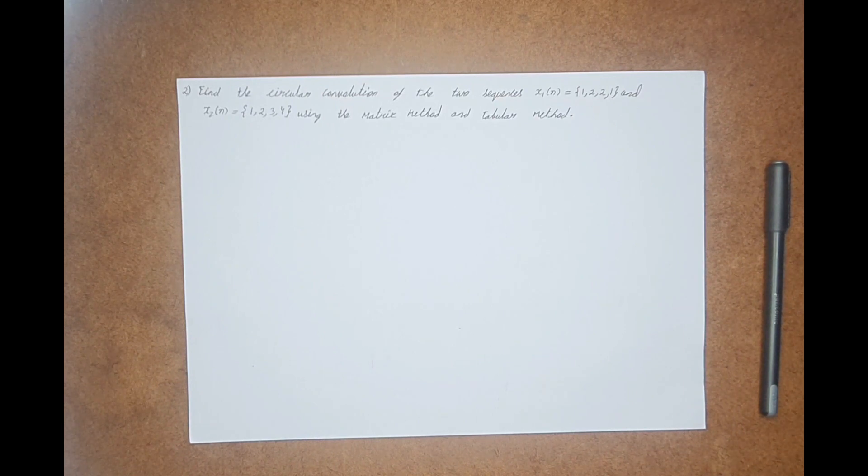In this video, I will be explaining how to find the circular convolution between two sequences with the help of the matrix method and the tabular method. The tabular method is very useful because using that method you can easily find the answer, and it is very useful to verify your answer in examinations. So, let us begin.